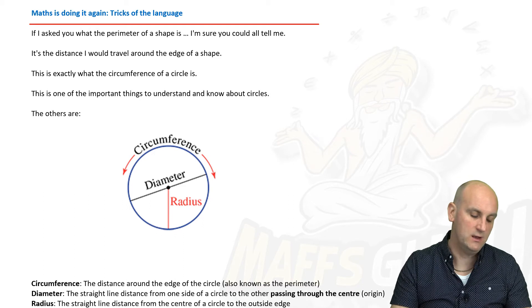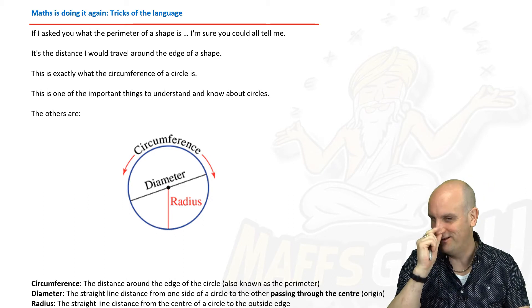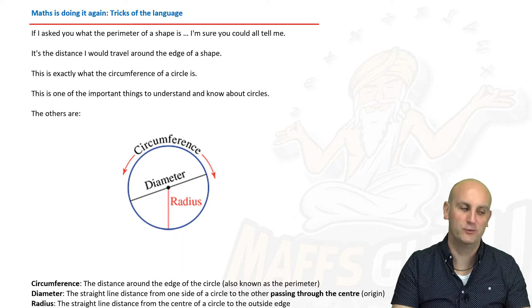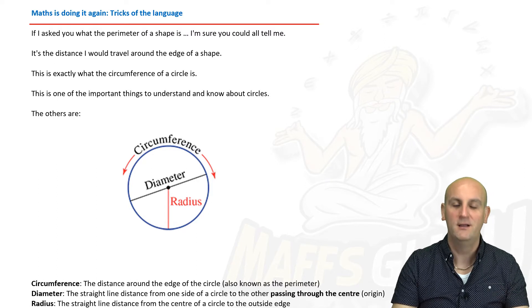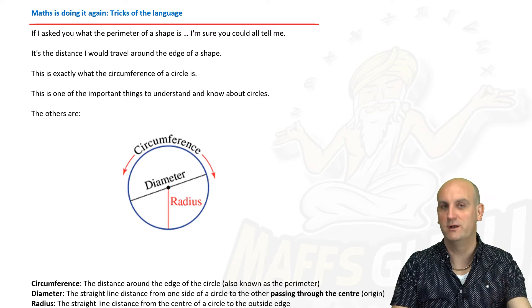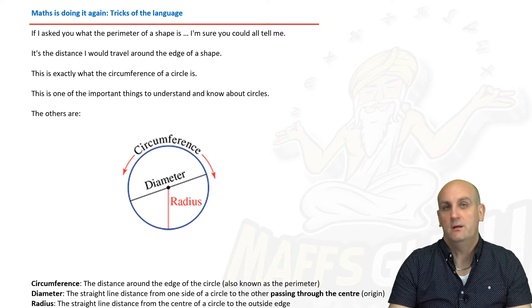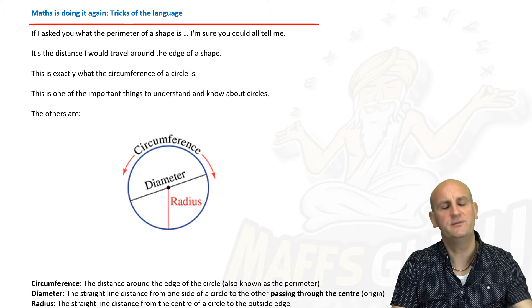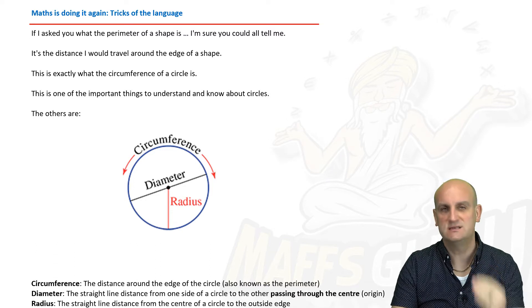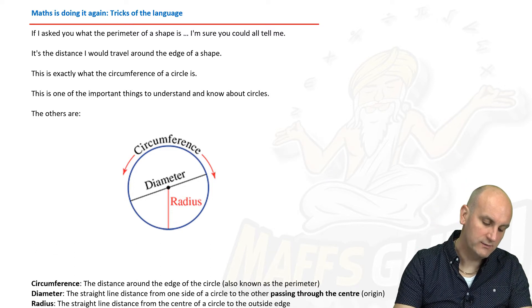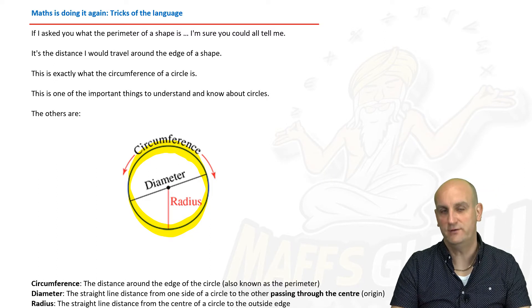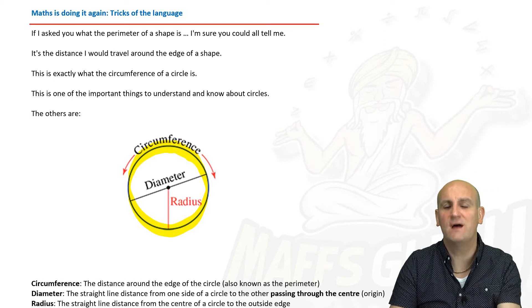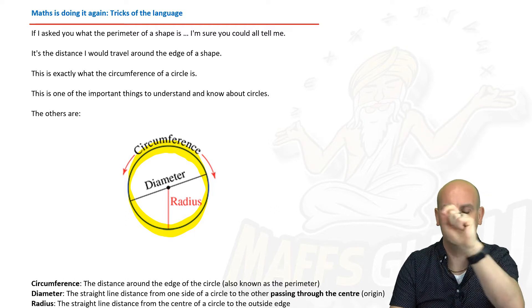Then lo and behold, someone comes along and says: we've got circles — let's not call it perimeter, let's call it circumference. That'll confuse 90% of the country. The point is: perimeter and circumference are the same thing. For a circle, the perimeter — that distance all the way around the edge — is the circumference. And it's really important: circumference is all the way around that whole circle.